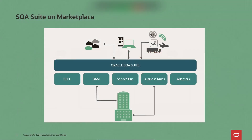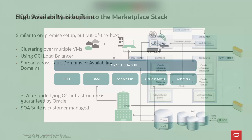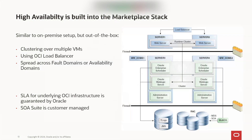SOA Suite on Marketplace has a long history running on-premises, on OCI, and on different platforms. High availability there is also built in — we have a maximum availability architecture. High availability uses clusters of at least two nodes. The underlying Oracle WebLogic Server provides the clustering, with metadata stored in the database, along with other volatile data like transaction logs and JMS messages, because database replication is the easiest approach.